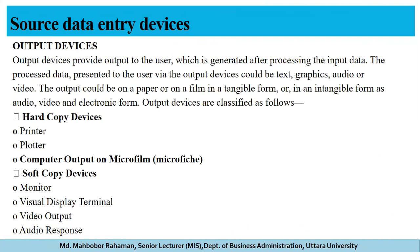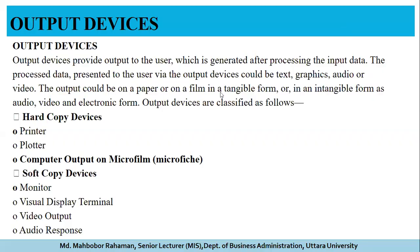Output devices provide output to the user after processing of input data. Output devices are divided into two main parts: hard copy output devices and soft copy output devices. The most common hard copy output devices are the printer and plotter. The most common soft copy output devices are the monitor, visual display terminal, video output, and audio response.